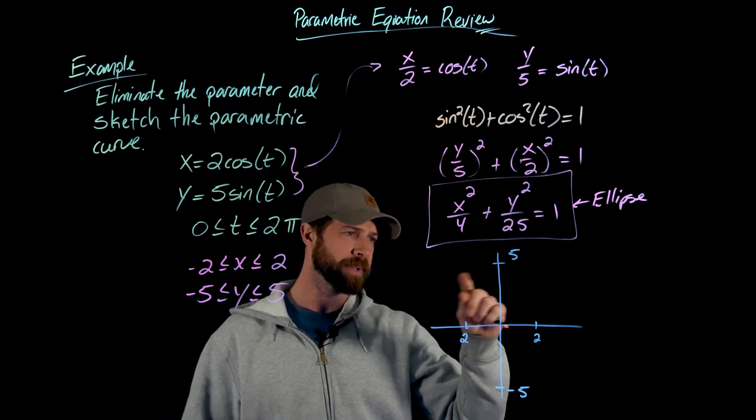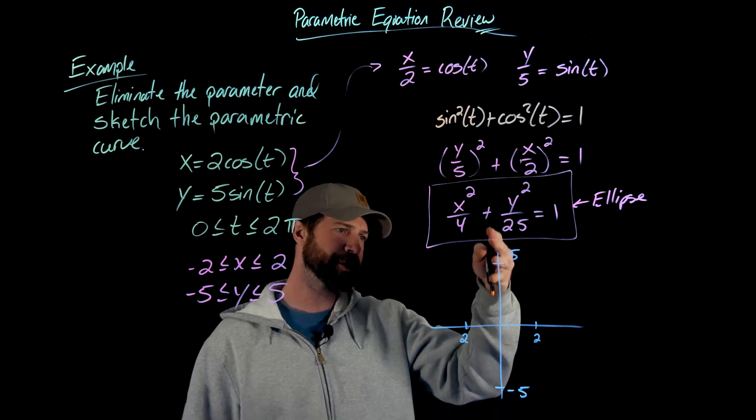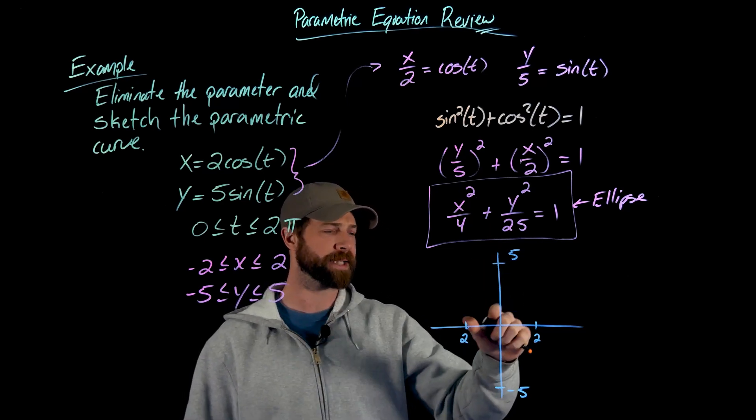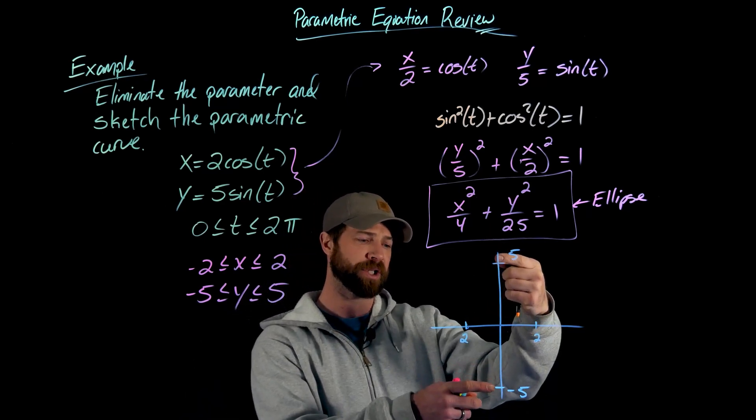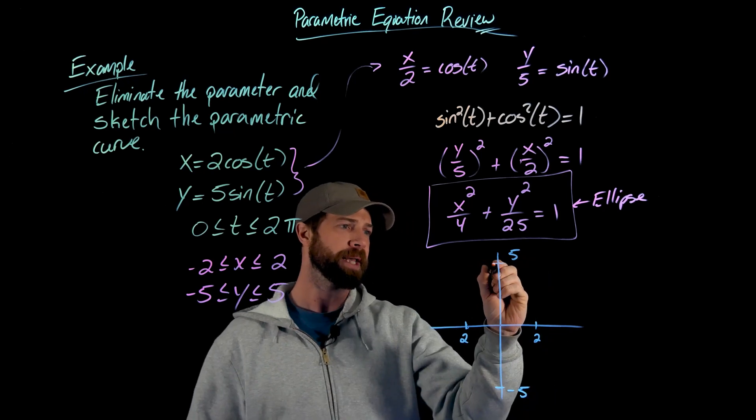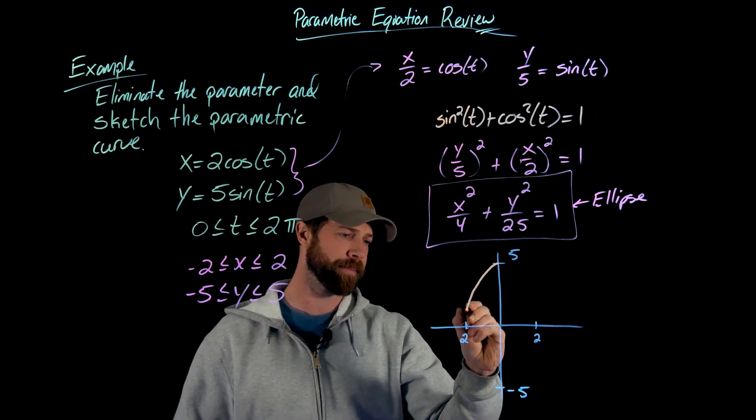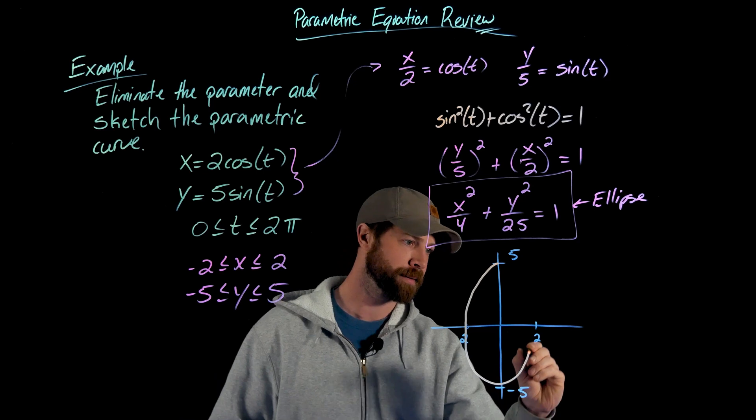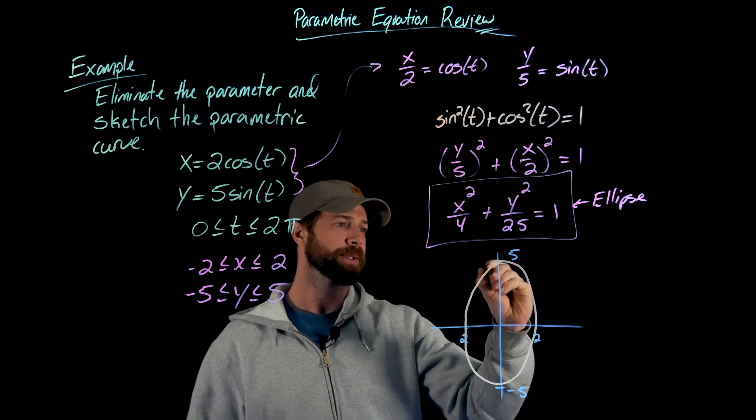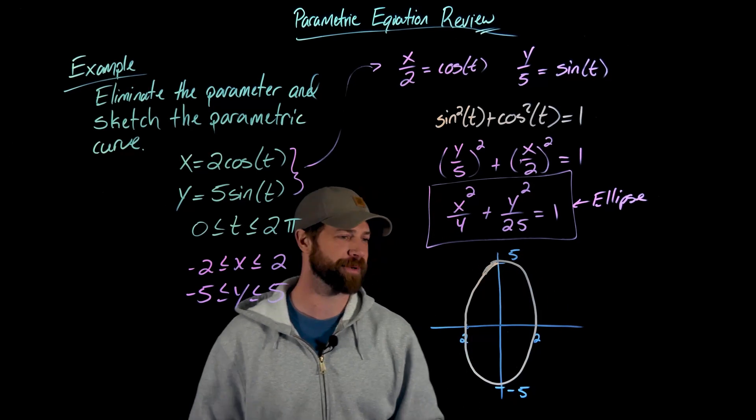So this ellipse will be this circular shape that has a major axis that runs along the y-axis. We call this the major axis because it's the longest of these two axes. In this case it will look something like this. Which ended up coming out pretty nice, that's pretty good.